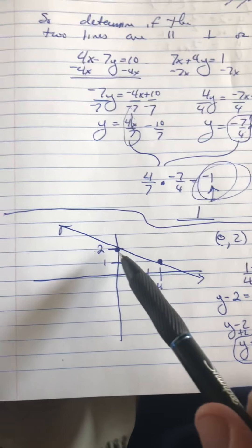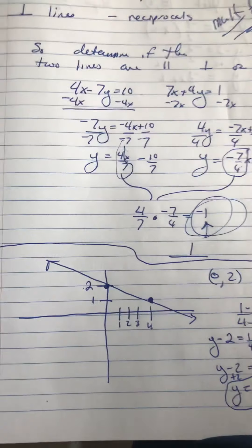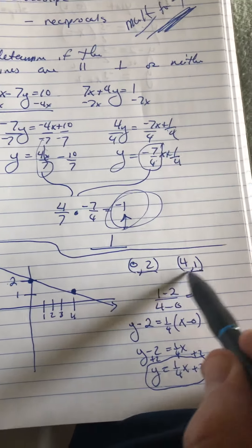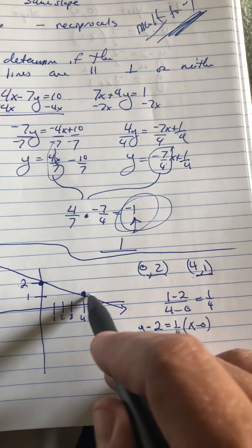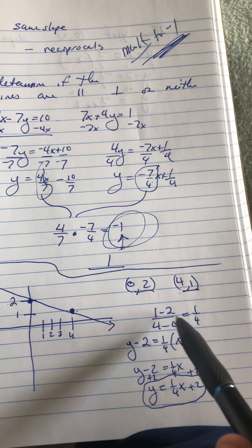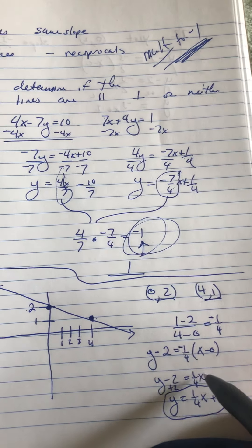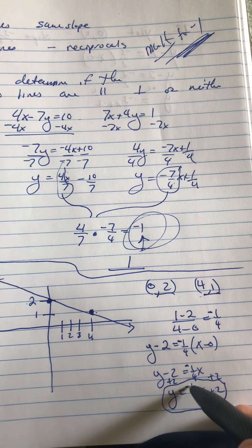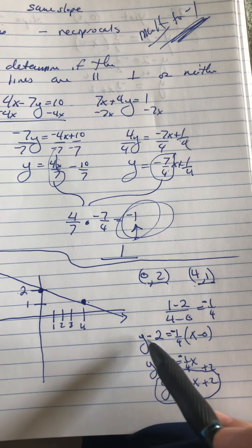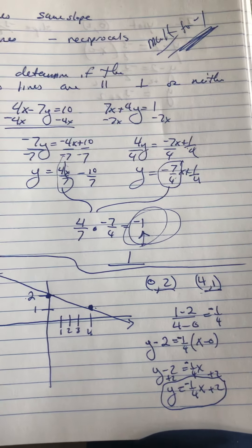Okay. All right. Your book likes to give you pictures, and they say, Okay, see if you can get the equation of this line. Well, you need two things. You need a slope, and you need a point. Well, we already have points. We have two points on there. So, 0, 2, and 4, 1. So, at first, I get the slope. 1 minus 2 over 4 minus 0. So, I end up with a negative 1 fourth. So, I have y minus 2 equals negative 1 fourth x. I add 2, and I have y equals negative 1 fourth x plus 2.